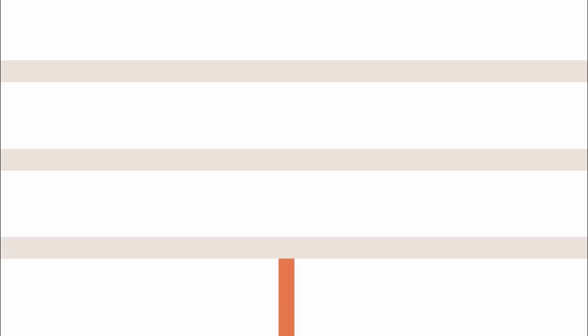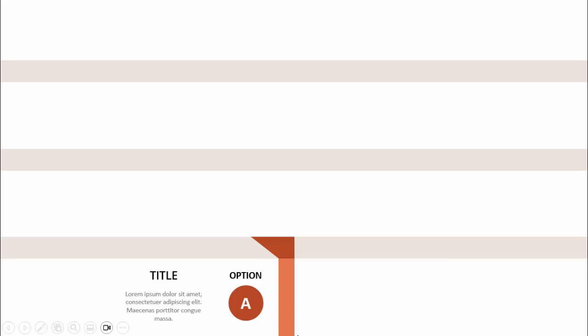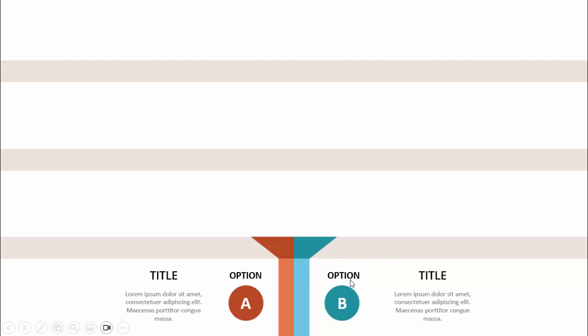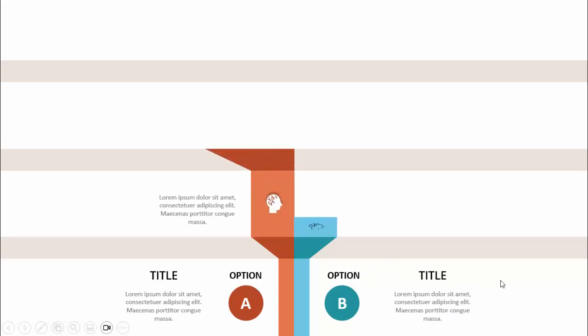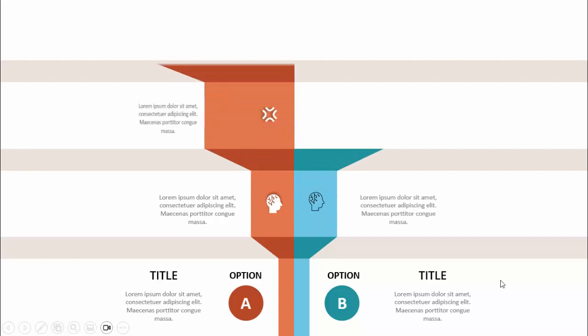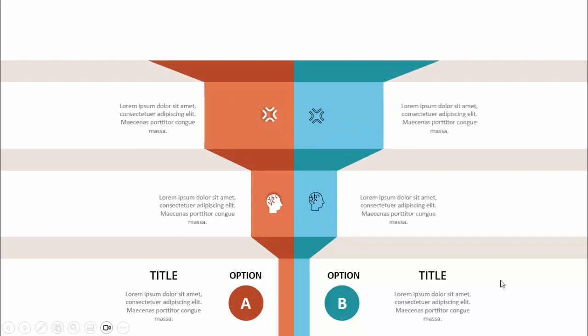In today's tutorial I'm going to show you how to compare option A versus option B. When I click it will show the first option — option A with the title and detail text. When I click again it will show with the blue color on the right side option B and its title, then the next comparison happens for option B then option A, with different icons.